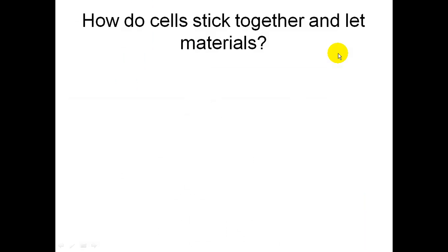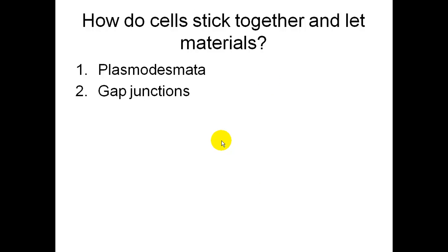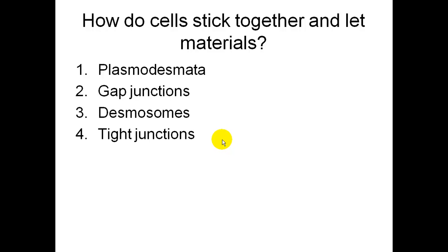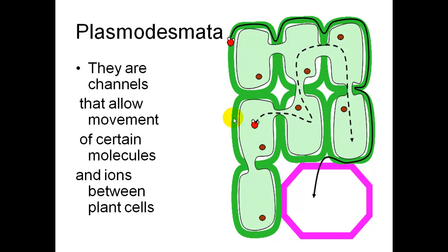How do cells stick together and let materials in or out? The mechanisms are plasmodesmata, gap junctions, desmosomes, and tight junctions. Plasmodesmata are channels between plant cells — you can see them in the diagram connecting adjacent cells — and they allow movement of certain materials from cell to cell.